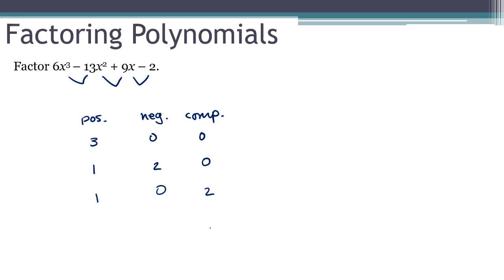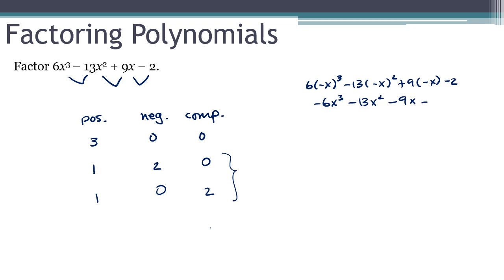Let's do the negative version of Descartes' rule of signs and see if that helps eliminate one of these two options. I'm going to evaluate the polynomial at negative x, putting negative x in for all of the x's. This becomes negative 6x cubed minus 13x squared minus 9x minus 2. There are no sign changes there, which tells me there are no negative roots. So this last row here is the one that works for the one positive root.